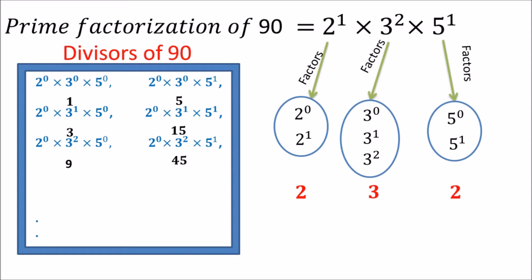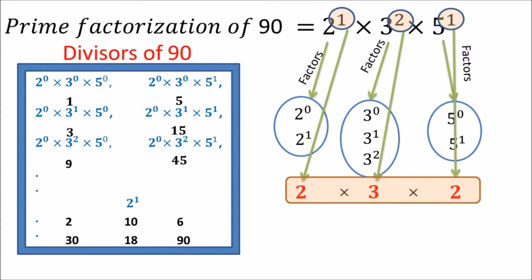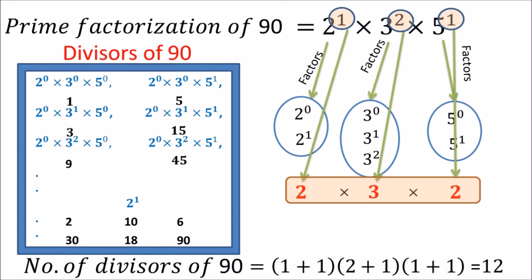Continuing, divisors from 2⁰×3¹ combinations give 3 and 15, and from 2⁰×3² combinations give 9 and 45. By taking all combinations with 2 raised to power 1 we get six more combinations, giving divisors 2, 10, 6, 30, 18, and 90. So the number of divisors equals 2 times 3 times 2, where 2 is 1 greater than the power of 2, 3 is 1 more than the power of 3, and 2 is 1 more than the power of 5. The formula holds: (1+1)(2+1)(1+1) = 12.